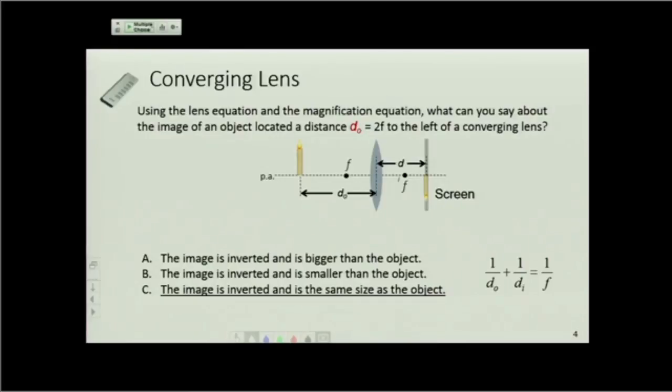So if this increases, what will happen to, so if D₀ increases, what happens? If D₀ increases, 1 over D₀ decreases, right? So if this is decreasing, if the right hand side is fixed, this should increase. That means 1 over Dᵢ has to increase. That means Dᵢ has to decrease. So D₀ increases, Dᵢ decreases.